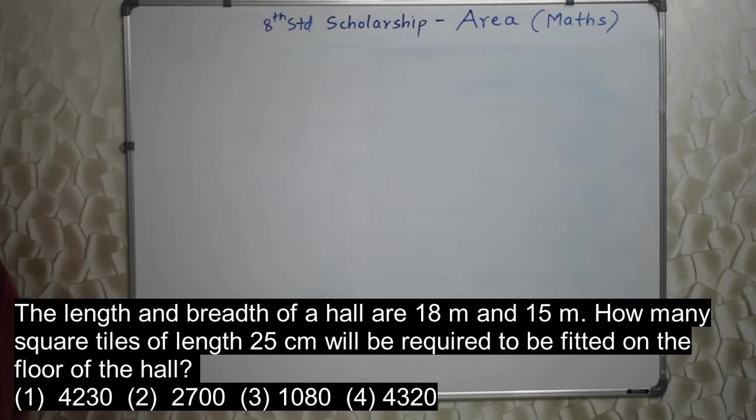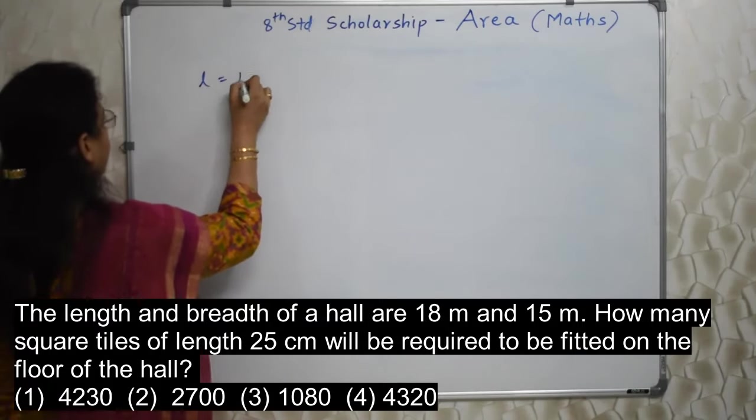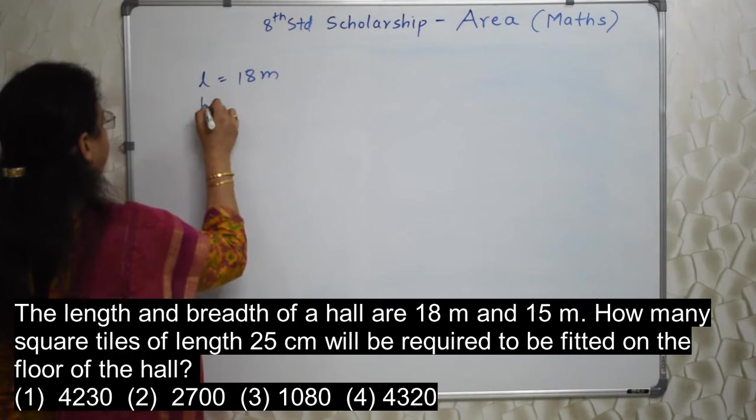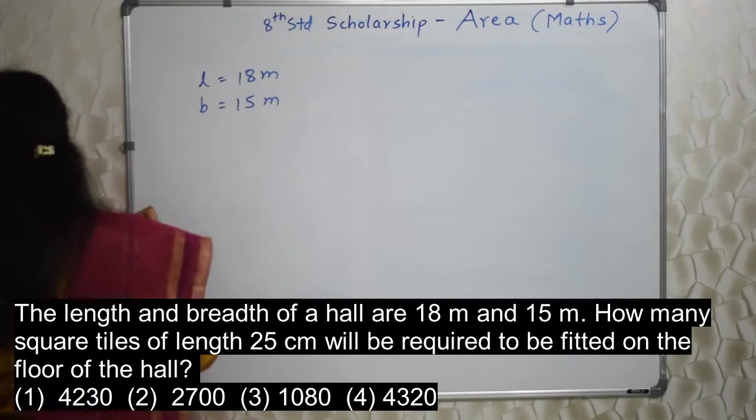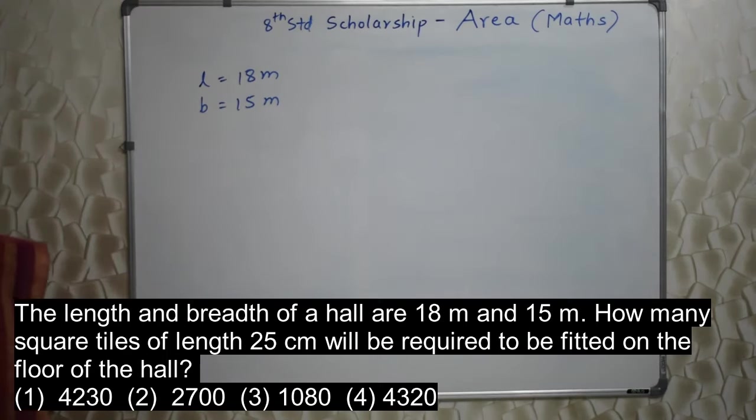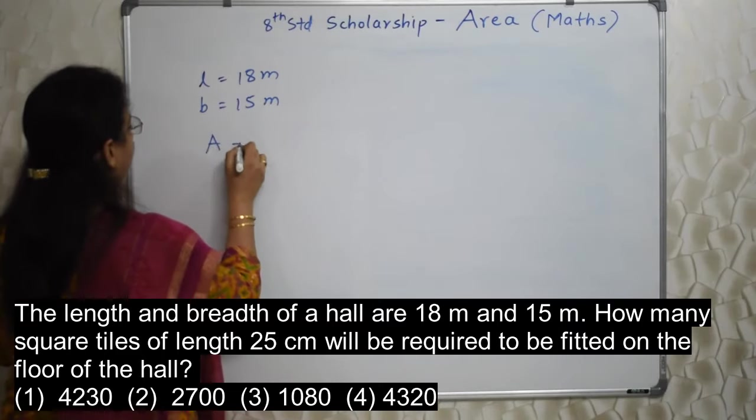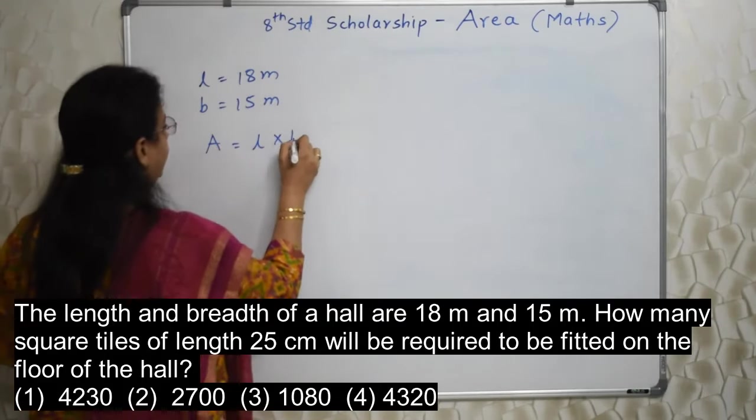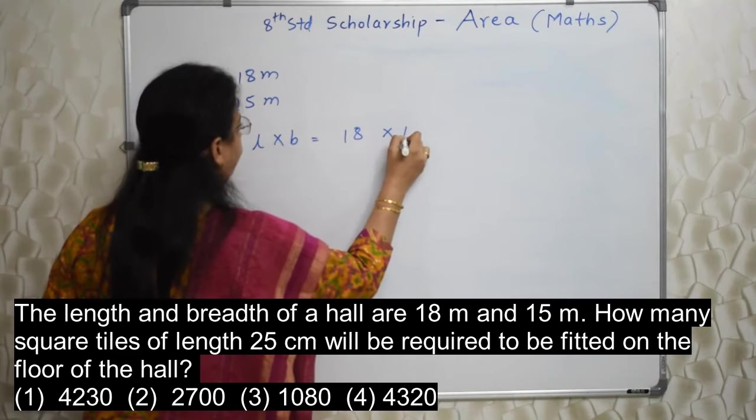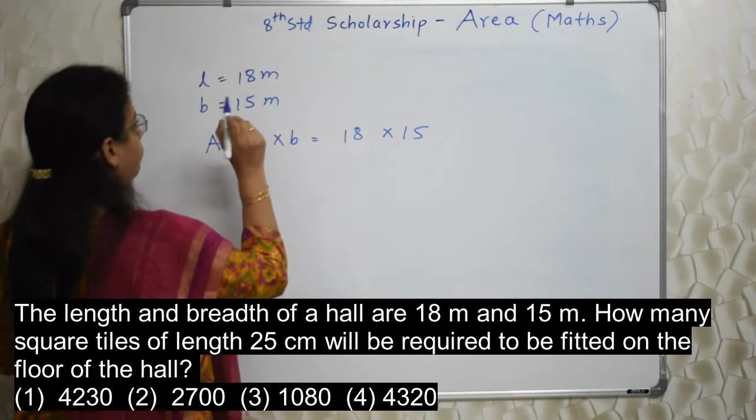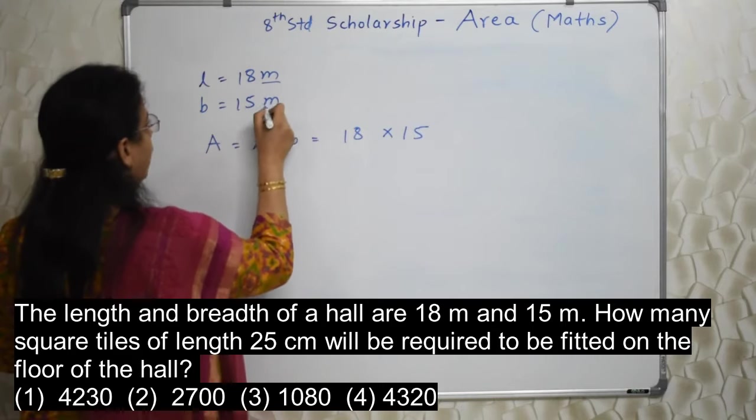Students, read the next sum. The length and the breadth of a hall are 18 meter and 15 meter. How many square tiles of length 25 centimeter will be required to be fitted on the floor of the hall? Now the hall is rectangular in shape with length 18 meter and breadth 15 meter. When we need to tile this hall, we need to find the area of this hall.